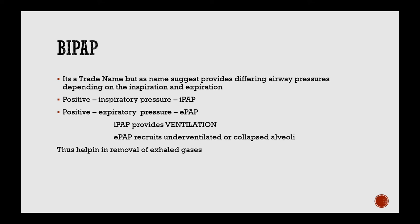BiPAP is usually a trade name, but as the name suggests, it provides differing airway pressures — a variable airway pressure delivery system that depends on the inspiration and expiration of the patient. IPAP (Inspiratory Positive Airway Pressure) provides ventilation, while EPAP (Expiratory Positive Airway Pressure) recruits underventilated or collapsed alveoli. IPAP plus EPAP together complete the ventilation parameters in a patient, making BiPAP always superior to CPAP.